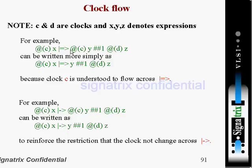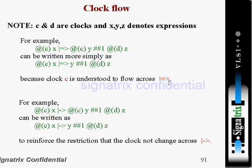Now we can re-write this same statement like this. How? At clock C, clocking event C, X should occur. Then at the passage of, or at the negative of the clocking event — because both are the same clock — we are expecting Y. So after one clock cycle delay, we are expecting D, the same thing. At the passage of clock event D, we are expecting D. So because clock C is understood to flow across this thing.